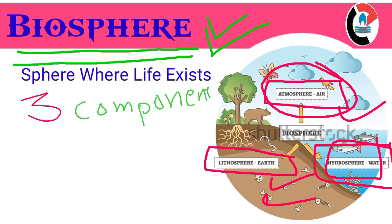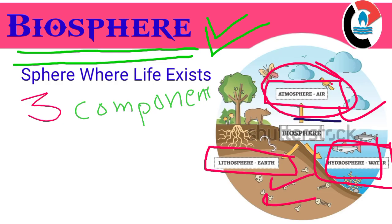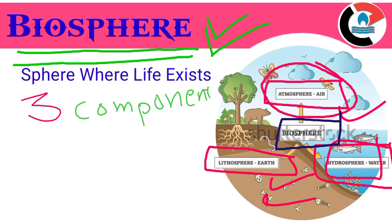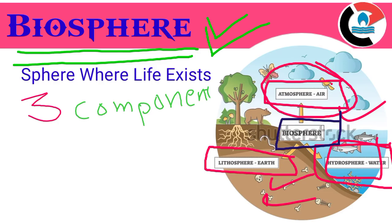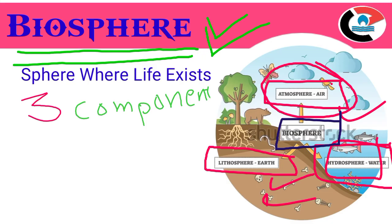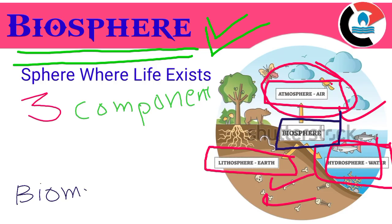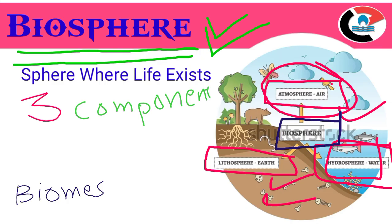In fact, it has been said that the biosphere is like the peel in relation to the size of an apple. The biosphere is the biggest biological system, and it consists of smaller functional units known as biomes.